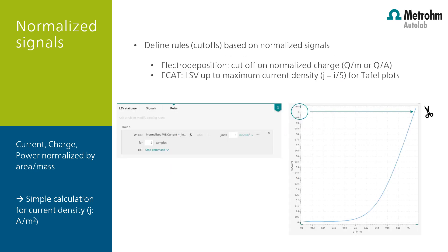In this INTELO 1.4 version, it is also possible to set rules for the normalized signals. For example, you can stop the procedure if the current density reaches 1 mA per square centimeter. Two other examples are during electro-deposition when you want to stop the deposition if the charge per square meter reaches a certain value, or in electro-catalysis if you want to run a linear sweep up to a certain current density for making a Tafel plot. This can all be programmed in the rules section of the measurement command.